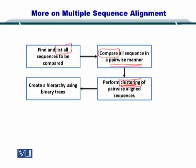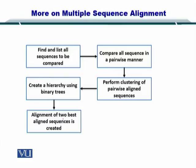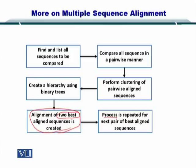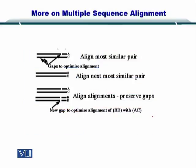Using this clustering information, you create a hierarchy using binary trees. Next, you align the two best sequences and keep them. Then you repeat the process for the next pair of best aligned sequences. For example, if you have sequences one and two given by A and C, and you have aligned them, and for the next sequences B and D, you have aligned them as well — now you align the two pairs together.